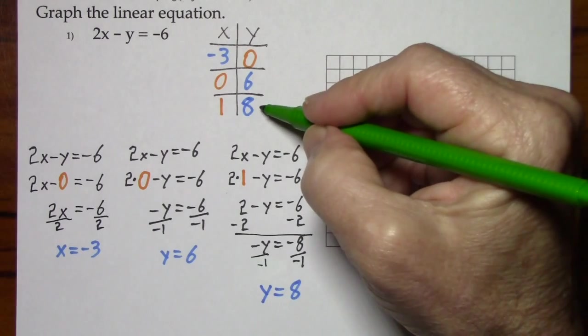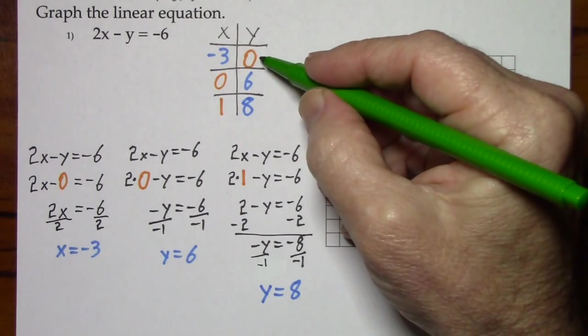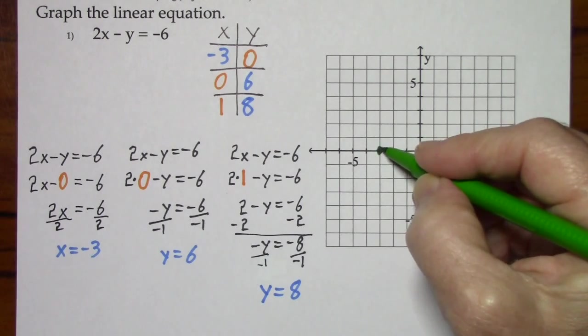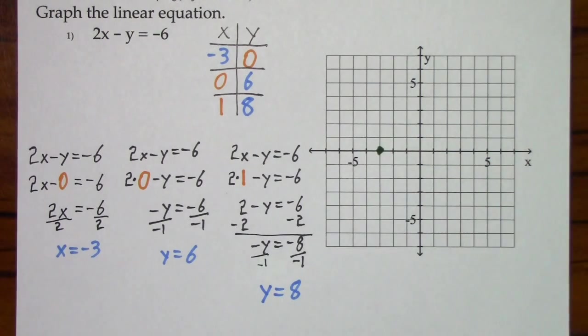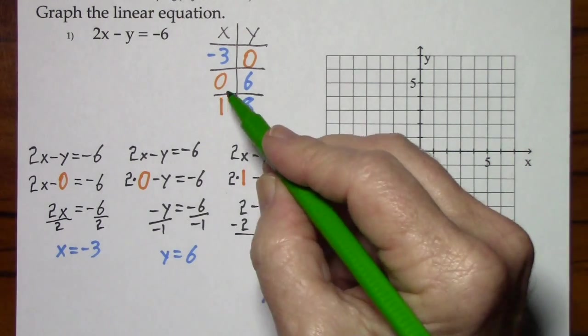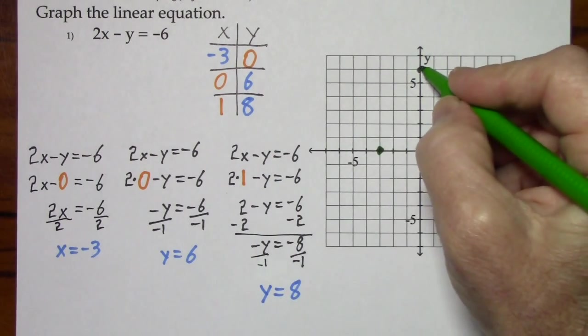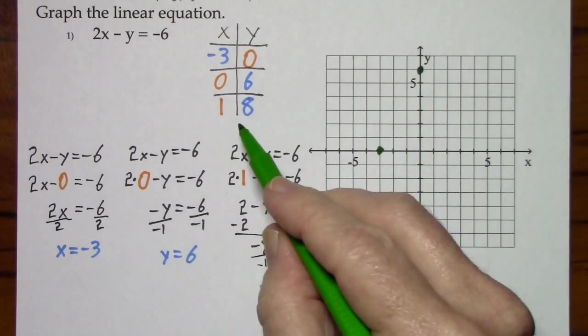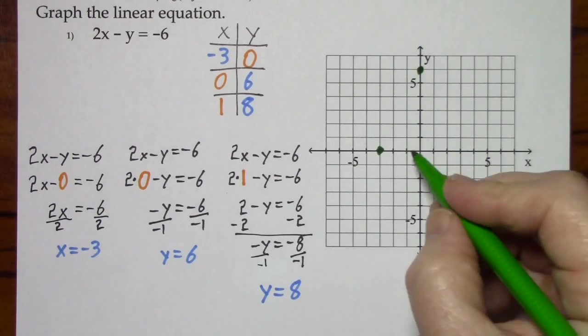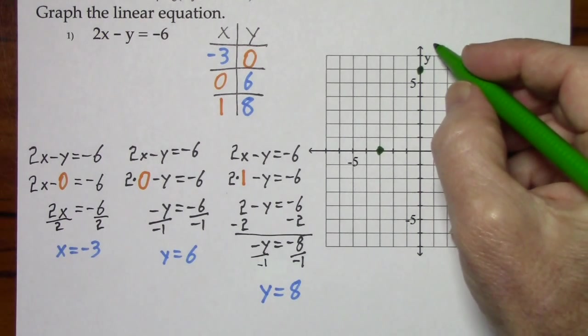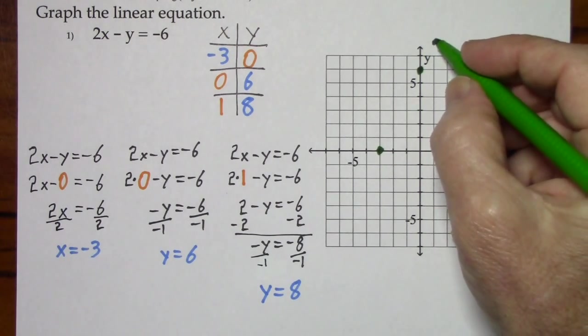So we'll put 8 in our chart. So now I have 3 ordered pairs, negative 3 comma 0, no up or down, just over 3, 0 comma 6, no back and forth, just up 6, and 1 comma 8. That's over 1 and up 8, here's 7, so I suppose 8 would be right about there.